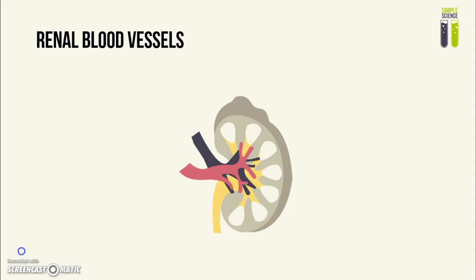Next, we have the renal blood vessels — blood vessels that go to the kidney. The renal artery brings blood from the body to the kidney so that it can be cleaned. The renal vein then brings the cleaner blood back.